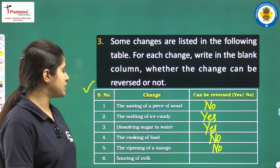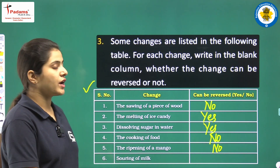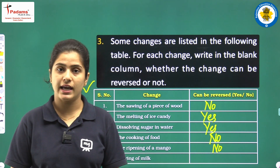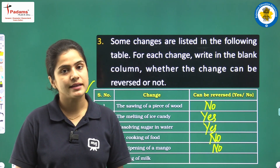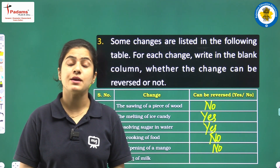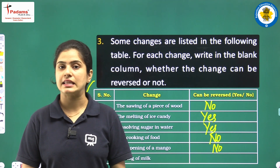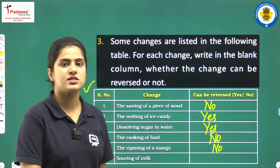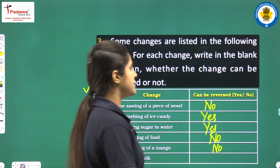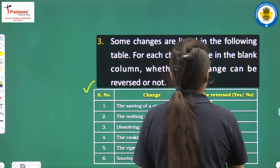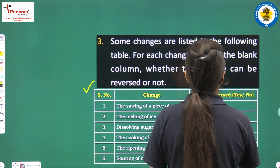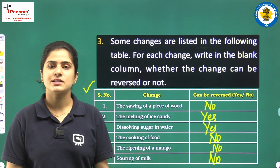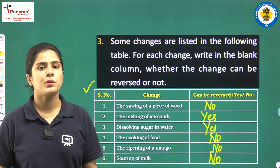The next change: souring of milk. Agar milk khatta ho gaya hai, toh hum milk ko dobara se us position pe nahi la sakte. So the answer to this point is also no — this change can't be reversed. That was your third question.